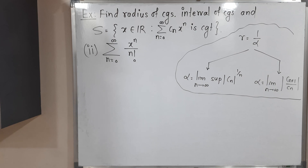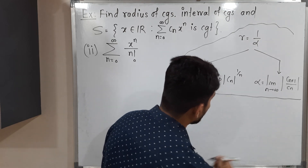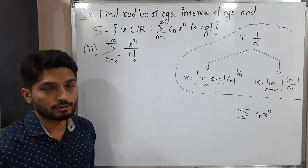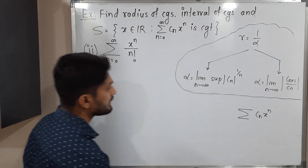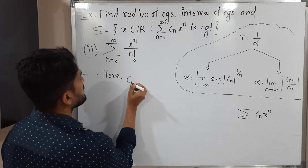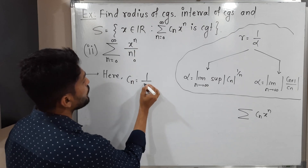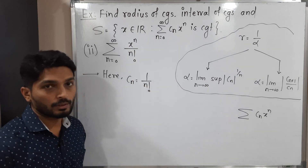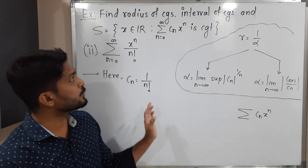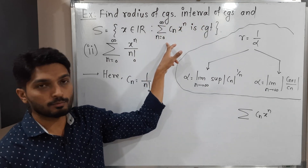Now we have a second power series: summation x raised to n upon n factorial. Comparing with the standard power series Cn x raised to n, Cn is the multiple of x raised to n. Here the multiple of x raised to n is 1 upon n factorial. Now the question is which formula to use to find alpha. We are again going to find radius of convergence, interval of convergence, and set S.